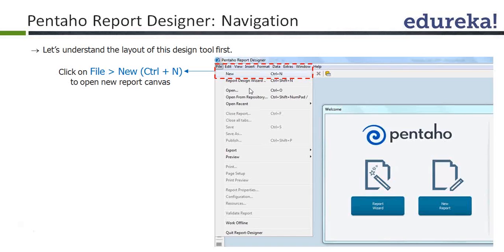So, how do you go to a new report? One option is from the welcome screen — you can click on New Report. That will take you to the empty report window. Or else, you can click on New, or use Ctrl+N. It will create an empty report and the canvas is yours.